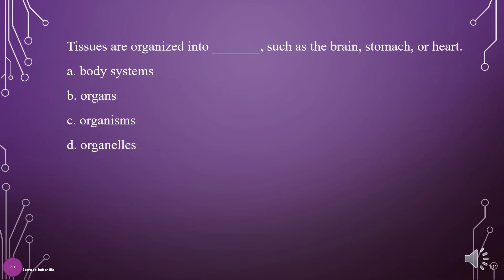Tissues are organized into what — such as the brain, stomach, or heart? A. Body systems, B. Organs, C. Organisms, D. Organelles. The answer is B: Organs.